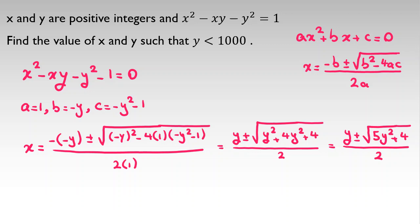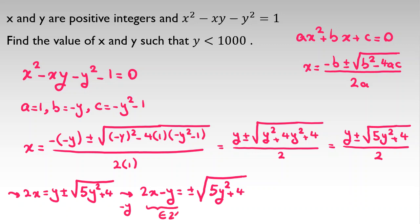Now, x is integer and y is integer. If I cross multiply, 2x = y ± √(5y² + 4). So if we subtract y from both sides, 2x - y = ± √(5y² + 4). Left-hand side is integer, so right-hand side has to be integer.